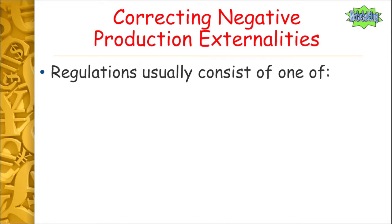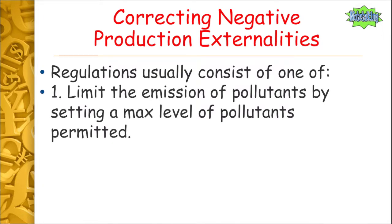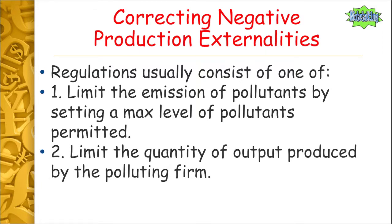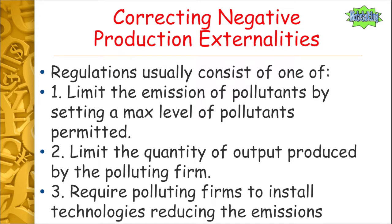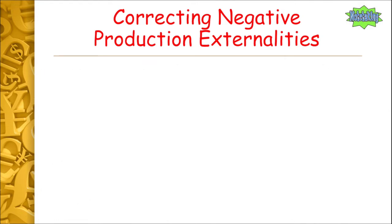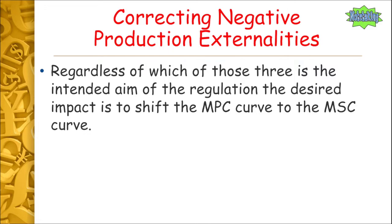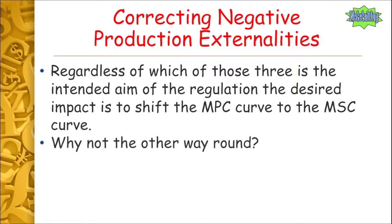Regulations rarely aim to completely ban pollution outright; the aim is more to limit or reduce the amount of pollution rather than to absolutely eradicate it. Different types of regulations can be used — for example, they can limit the emission of pollutants by setting a maximum level permitted, limit the quantity of output the firm can produce, or require the polluting firm to install green technologies that reduce emissions. Regardless of which option is chosen, the intended aim is always to shift the marginal private cost curve up to the marginal social cost curve.